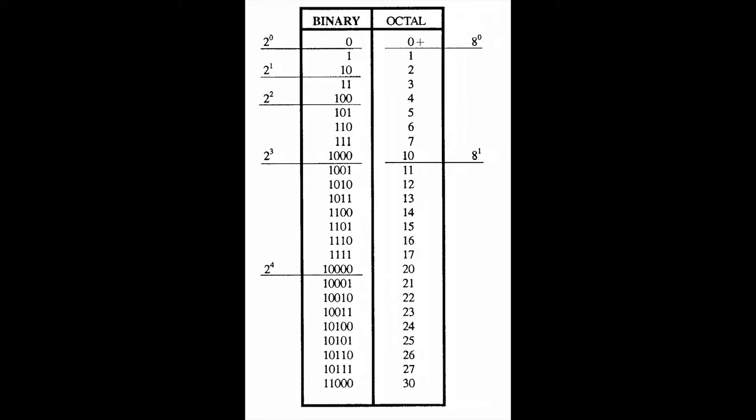It goes through 0 through 7, then starts up again at 10, goes through 17, then skips to 20, and so on.